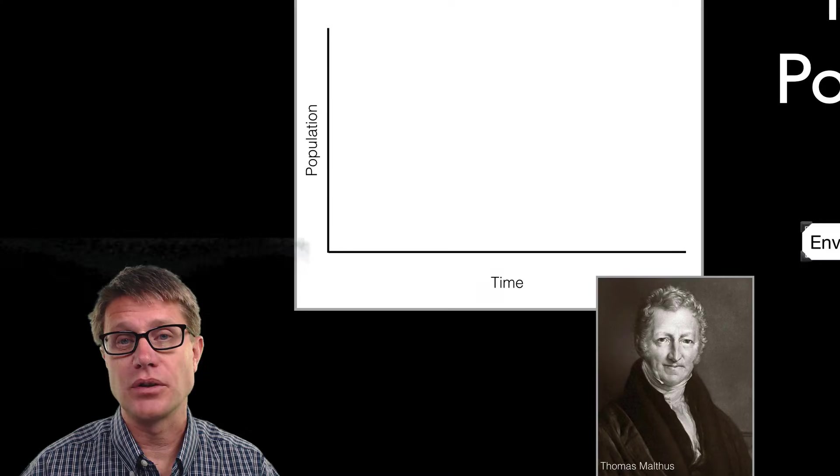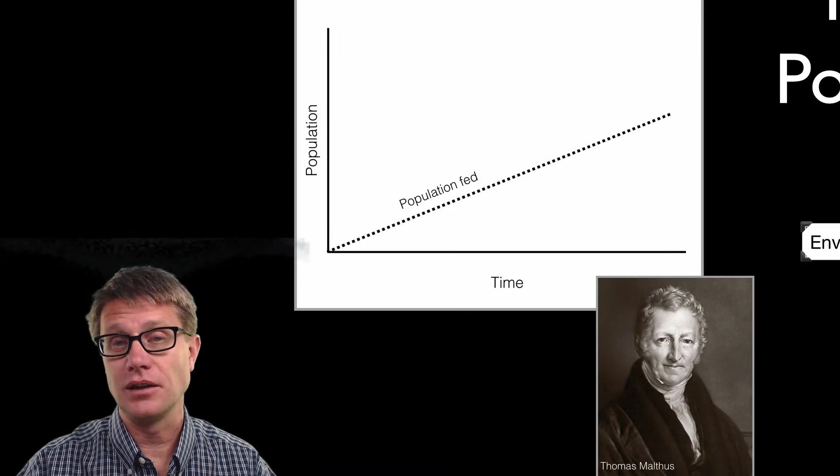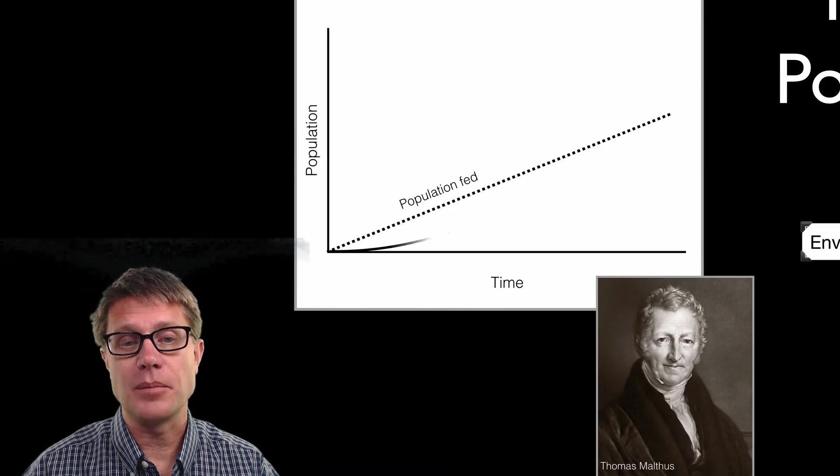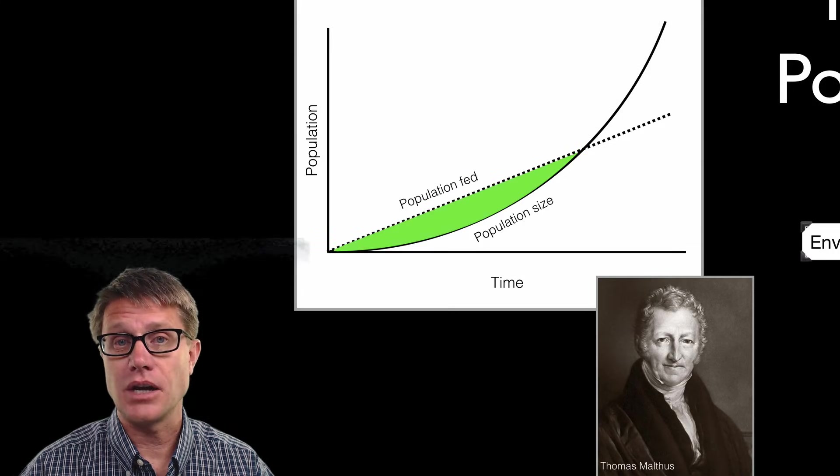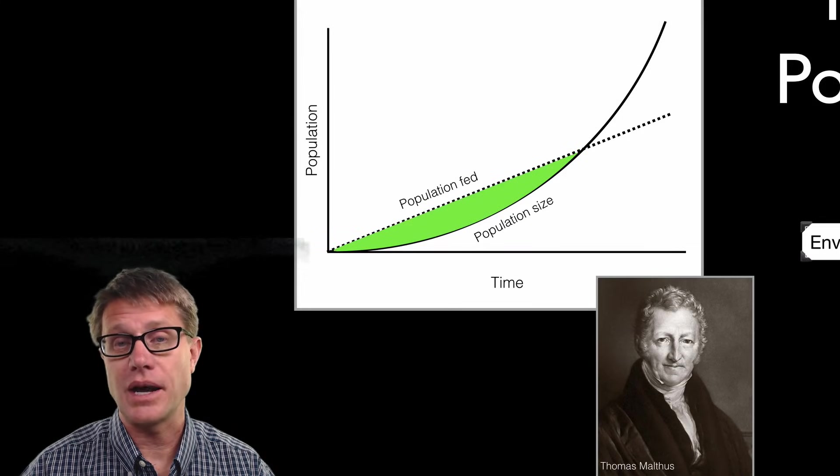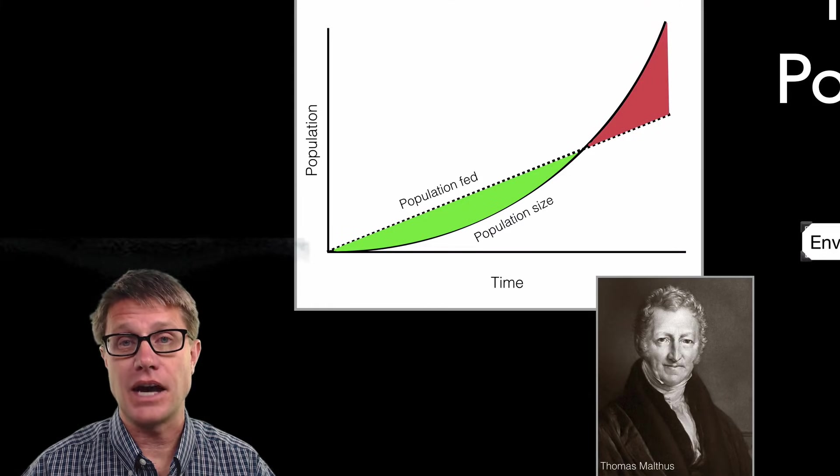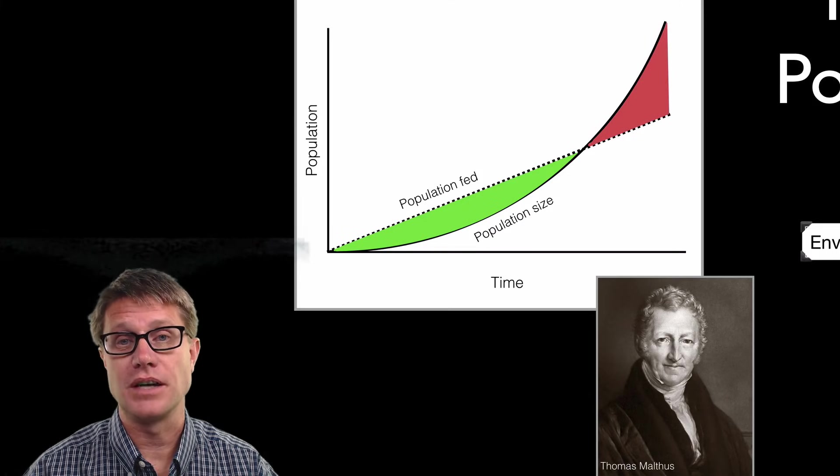Countries can produce food but they can only increase food production in a linear fashion. And we know that populations increase exponentially. So as long as you are in the green you are okay. But once our population surpasses the amount of food that we can produce we have got a catastrophe. We have got famine. People are going to die.